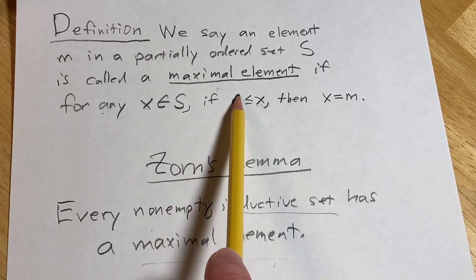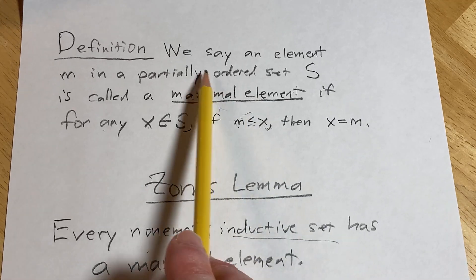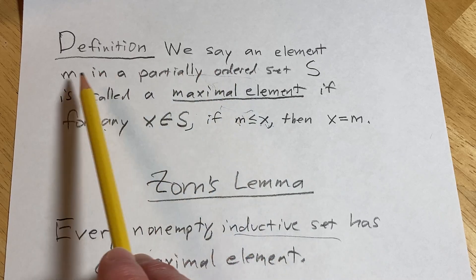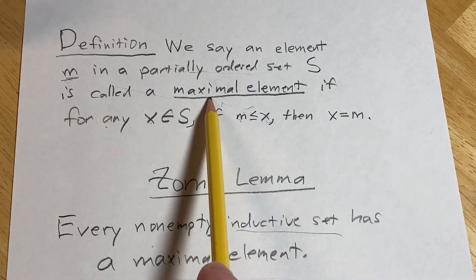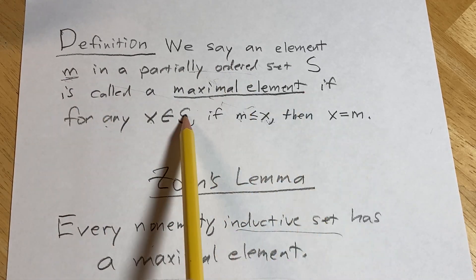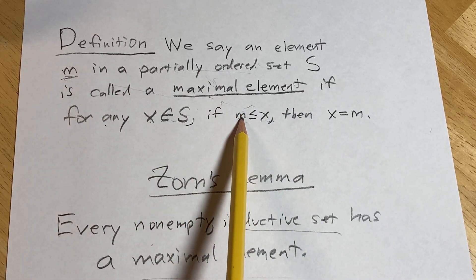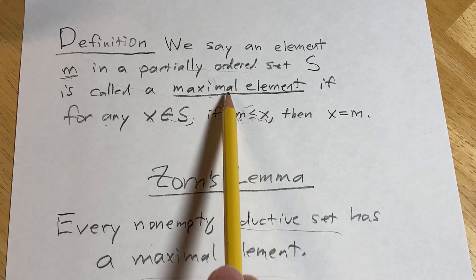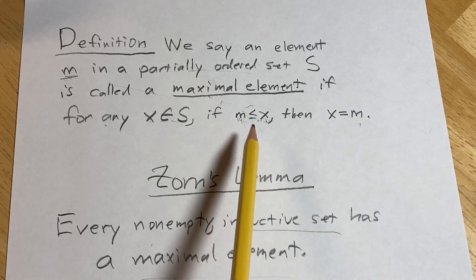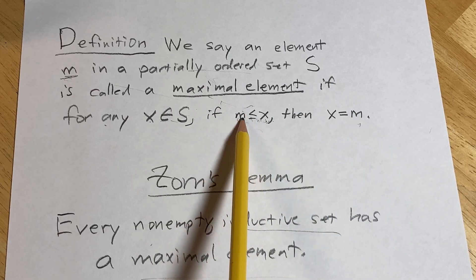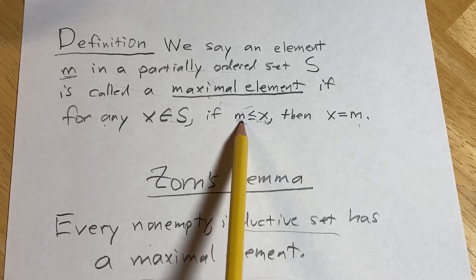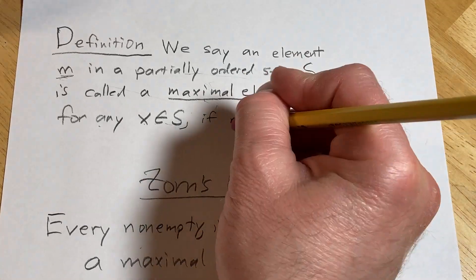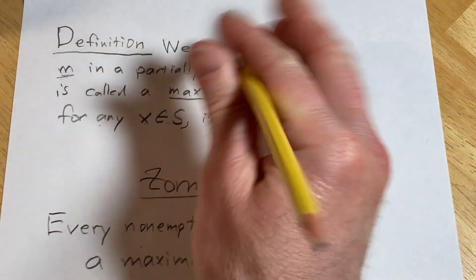And a maximal element — well, it's just the biggest element, basically. So little m is called a maximal element if, for every x, if m is less than or equal to x, well that can't really be the case — it's the maximal element, so it's got to be equal to x. So m can't be strictly less than. If you have that situation, m is equal to x, because m is maximal — that's by maximality.